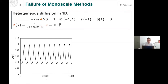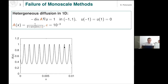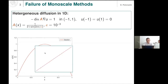You have the PDE: minus divergence of a times gradient of u equals some right-hand side f, which in my example is just 1. I use the unit interval with homogeneous Dirichlet boundary conditions. The only troublemaker is the coefficient a, which I allow to oscillate on a small scale epsilon — here epsilon is about 1/1000. On a macroscopic scale the solution looks like a nice parabola, but zooming in reveals a fine-scale oscillation with frequency 1/epsilon and amplitude epsilon originating from the oscillatory coefficient.